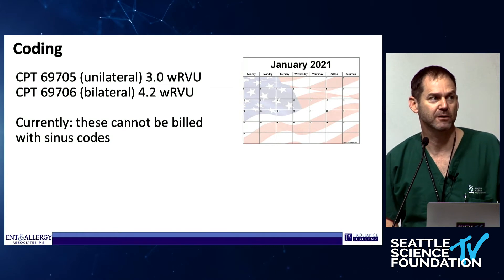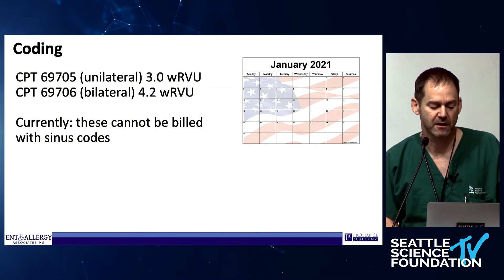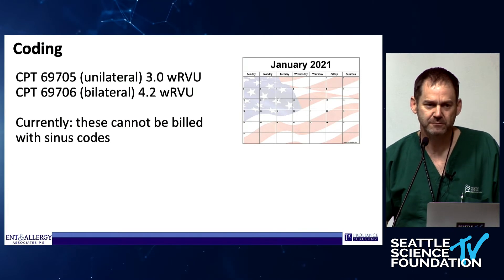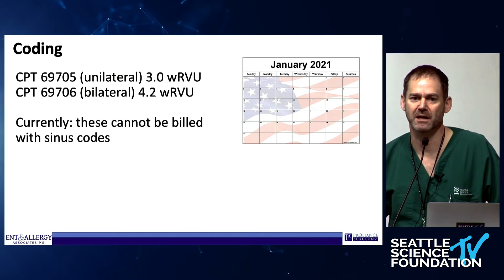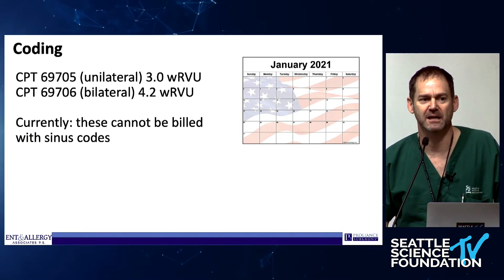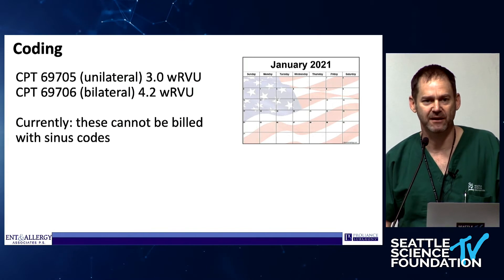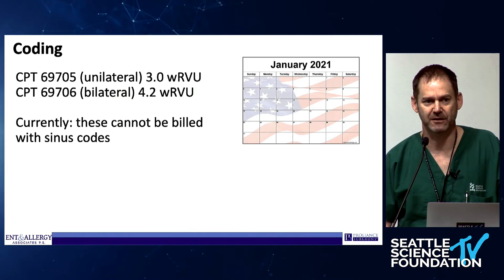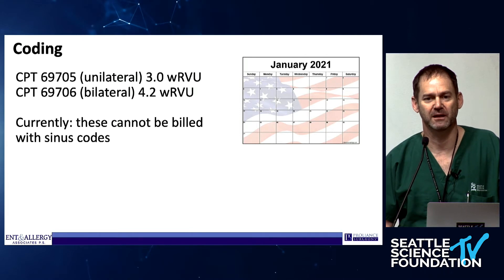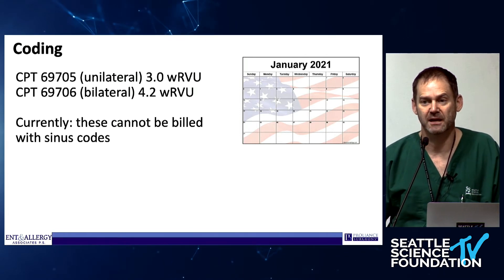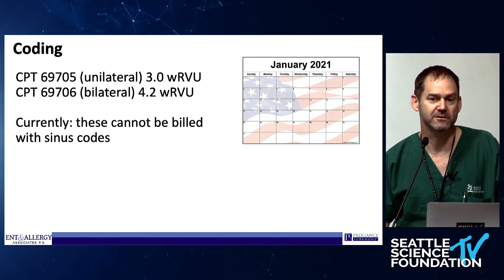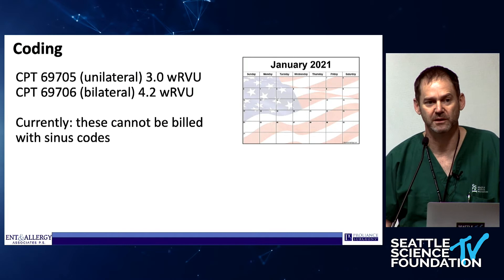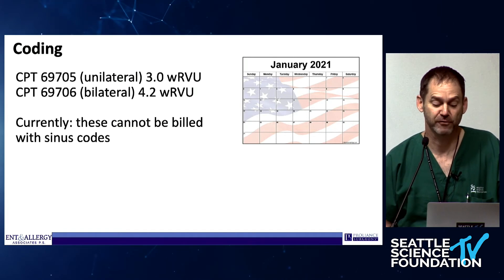As of January of this year, we have a CPT code — either unilateral or bilateral. For those who like RVUs, not too bad for the amount of effort it takes. The problem is when this code was going through CMS, there was an oversight: it bundles with any and every sinus code we have. So you cannot do a balloon dilation, code for it appropriately, and also code for sinus surgery — you won't get paid for the balloon dilation. There's a process in place thanks to the ARS and 3P from the academy that should change that within the next year.